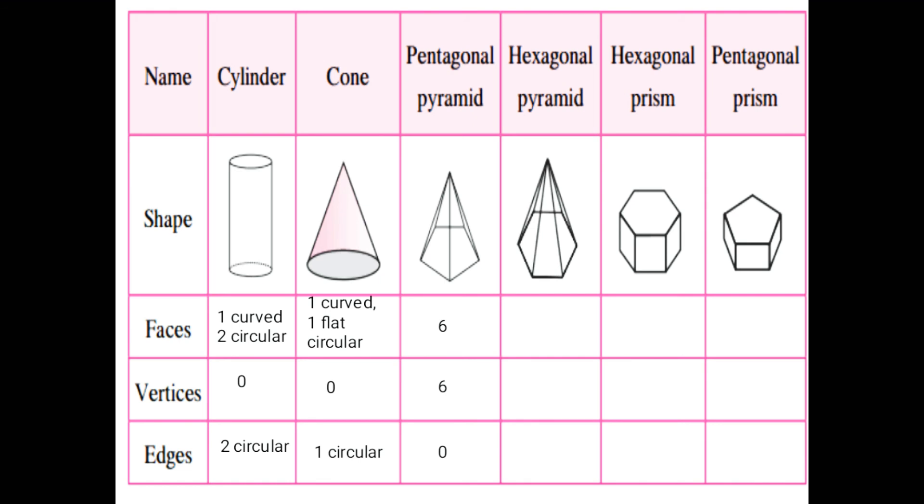Next is hexagonal pyramid. Number of faces is 7. Count it — front side: this triangle, then this triangle: 1, 2, 3, then 4, 5, 6. Back side again — same faces. Then the downside is a hexagonal shape. So 7 faces are there.